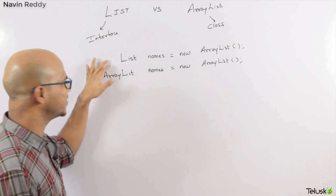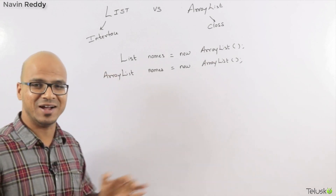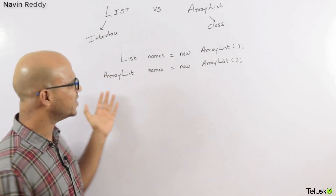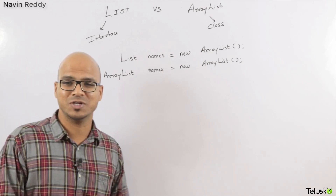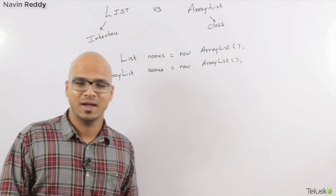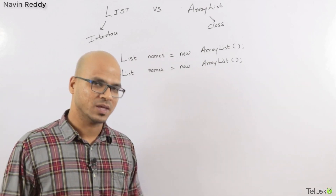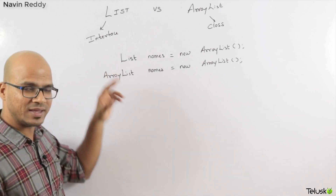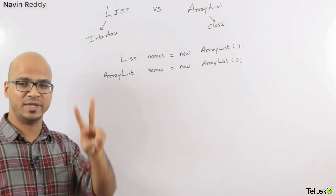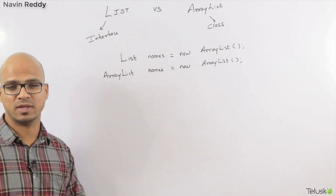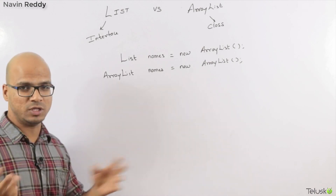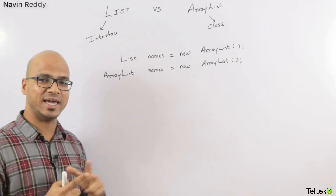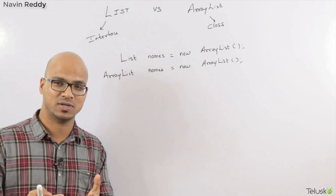First, this looks cool — we have a List interface and we are getting a reference of that. The other one is a simple class and we are creating an object of a class. But that's not the main reason. The real reason is that the List interface has multiple implementations. There might be many, but the two most famous ones are ArrayList and LinkedList.